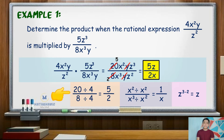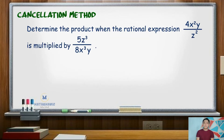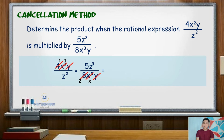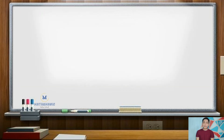Another way of solving this, which I find easier, is by the cancellation method. Take note that this can only be applied if there are common terms in both the numerator and the denominator. Using the first example: 4x squared y over z squared times 5z cubed over 8x cubed y. We can simplify 4 and 8 since both are divisible by 4 — 4 becomes 1, 8 becomes 2. For variable x, x squared is the common factor, so the numerator x squared becomes 1 and x cubed becomes x. Variable y cancels out. z cubed divided by z squared gives z. Thus, the product is 5z over 2x.